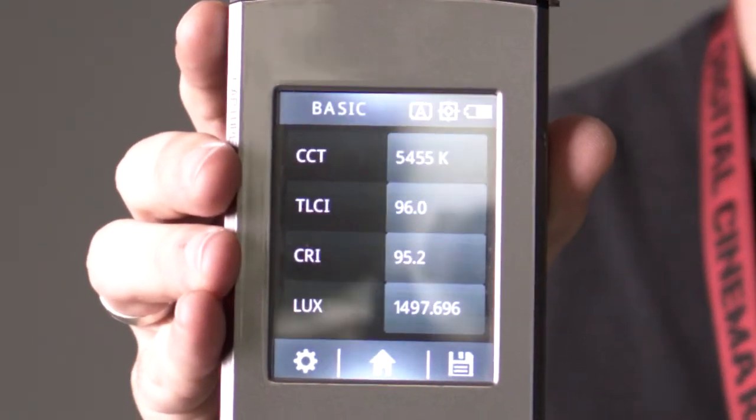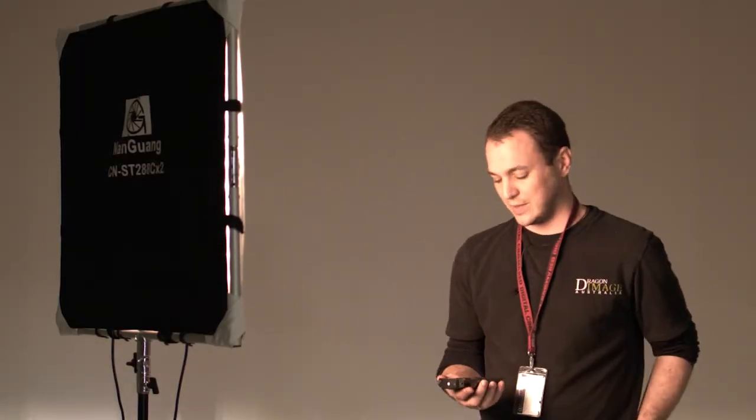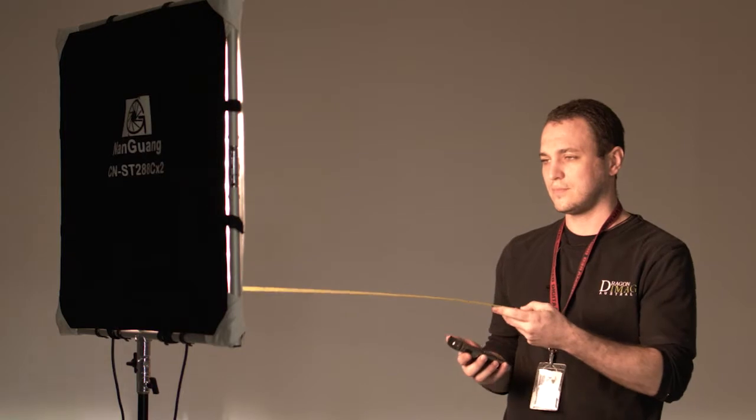We'll just take one more reading at tungsten. This is a variable colour light source and I always test all these things at full power. So again, ruler and measure.